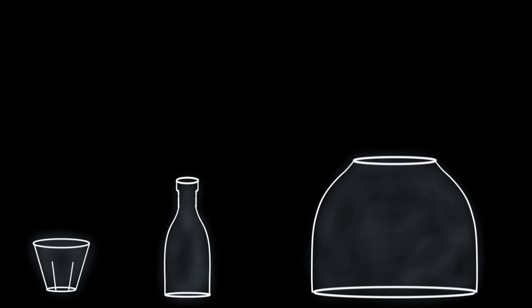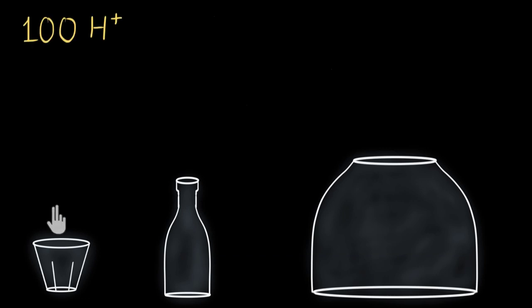Acidic solutions have more number of H+ ions. But if I have different acidic solutions which have the same amount of H+ ion, that doesn't mean their acidic strength is going to be the same. Let's do an experiment. Here I have a glass of water, a bottle of water, and a tank of water, and I am going to mix equal amounts of H+ ions in all of them — 100 H+ in the glass, 100 H+ in the bottle, and 100 H+ in the tank.